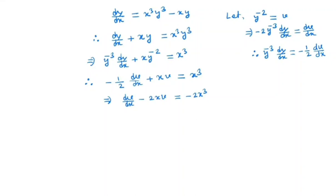I have already made a video on that — you can check it, I will give the link in the description box. In this method, first we find the integrating factor: I(x) = e^(integral of coefficient of v), which is the integral of minus 2x. By solving, we get e^(minus x²).